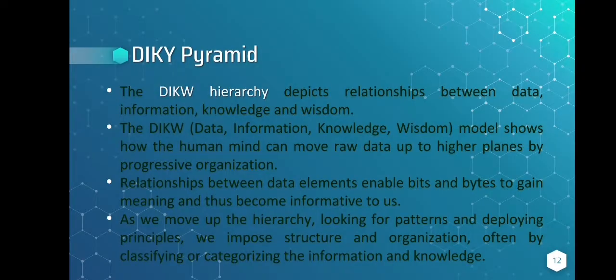The DIKW hierarchy depicts relationships between data, information, knowledge, and wisdom. The model demonstrates how the human mind can use progressive organization to transfer raw data up to higher planes. Bits and bytes gain significance and become informative as a result of relationships between data elements. As we move up the hierarchy, looking for patterns and deploying principles, we impose structure and organization, often by classifying or categorizing the information and knowledge.